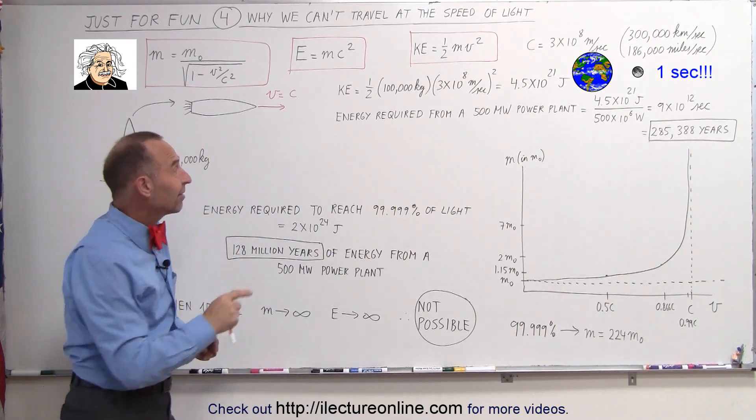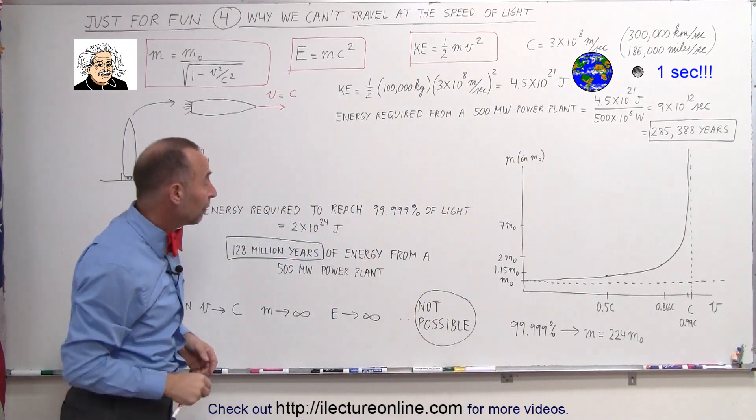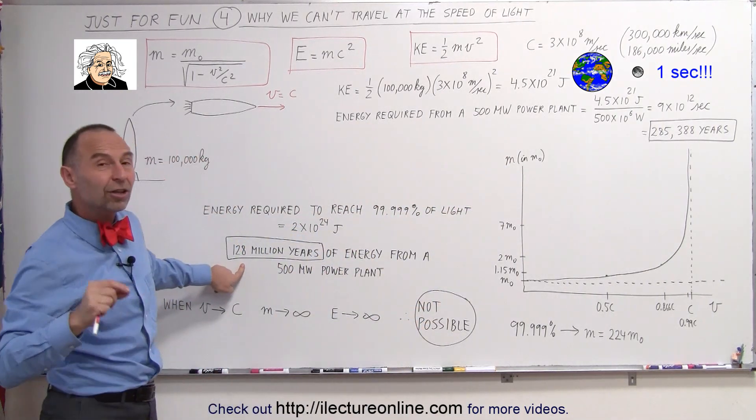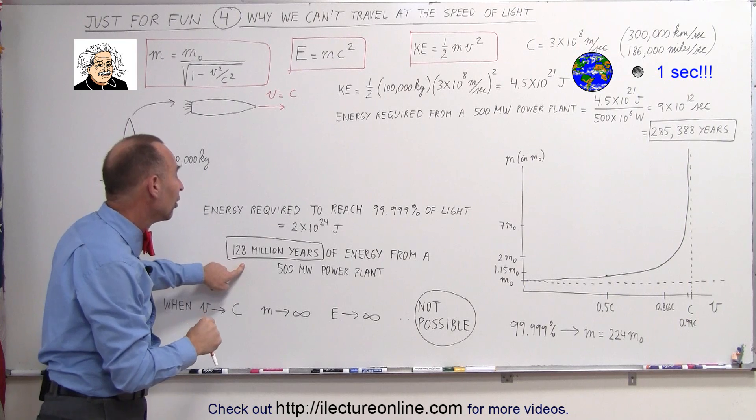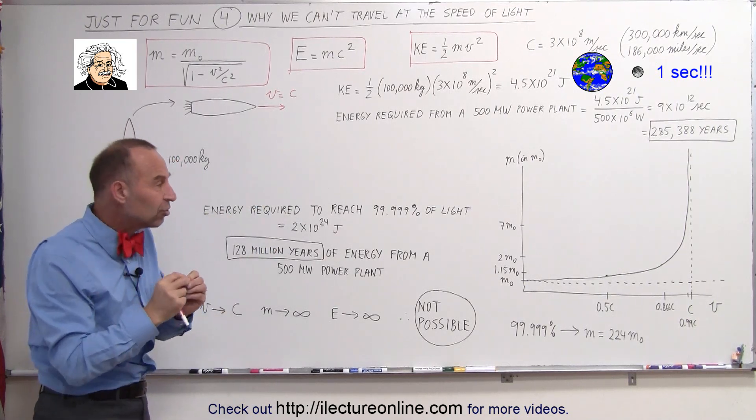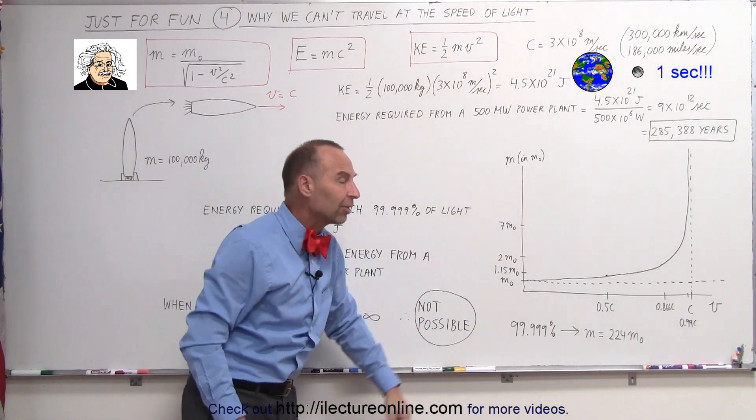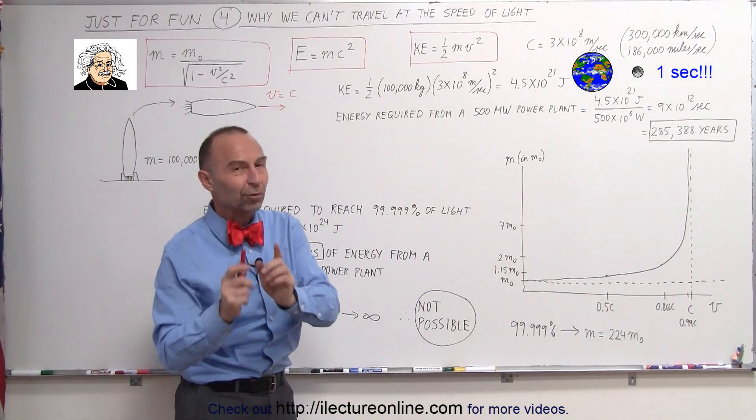would be so much energy that that same 500 megawatt power plant, which is an average-sized power plant, it would require 128 million years of production of energy of that one power plant to produce enough energy to make the spaceship go so fast that it can gain that kind of mass. But it doesn't stop there because we're not quite yet at the speed of light.